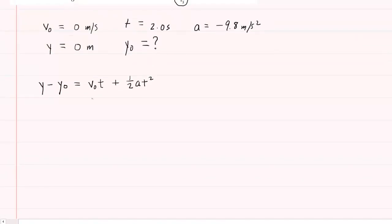And so we're going to go ahead and plug in all the known values that we just listed. The final y-coordinate was 0 minus the initial y-coordinate equals the initial velocity, which is 0 meters per second times the time, which we won't need to fill in because that's going to zero out, plus one half multiplied by negative 9.8 meters per second squared, multiplied by the time, which was 2 seconds squared.